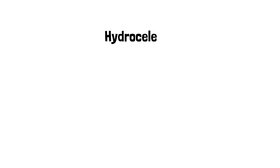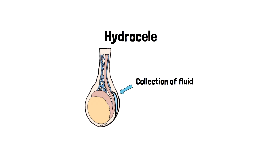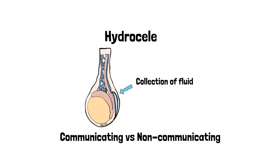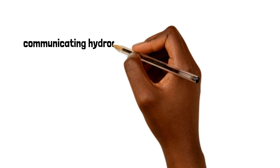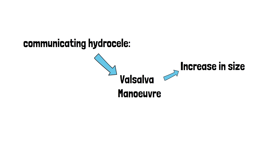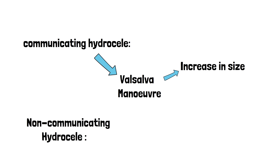Moving on to hydroceles, these occur where there's a collection of fluid within the tunica vaginalis. They can be classified as either communicating or non-communicating. A communicating hydrocele is caused by failed closure of the processus vaginalis, and as a result peritoneal fluid drains into the scrotum. The Valsalva maneuver will cause a communicating hydrocele to increase in size. Conversely, non-communicating hydroceles are caused by excess fluid production in the tunica vaginalis with no connection to the peritoneal space, so the Valsalva maneuver has no effect on the size.